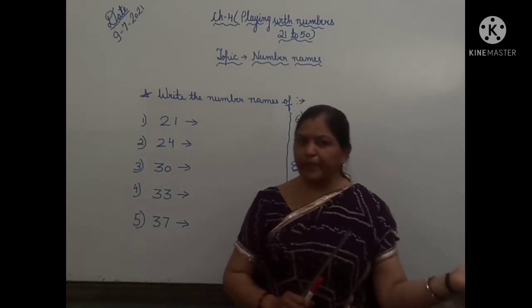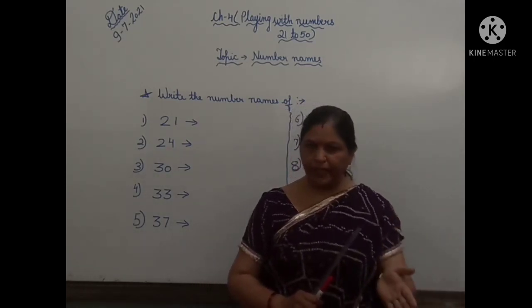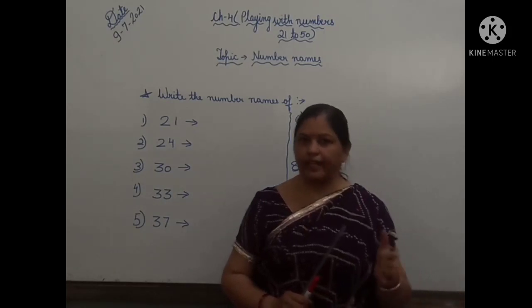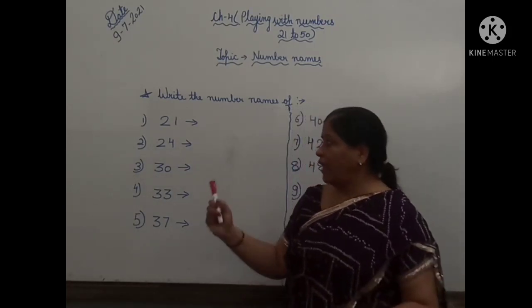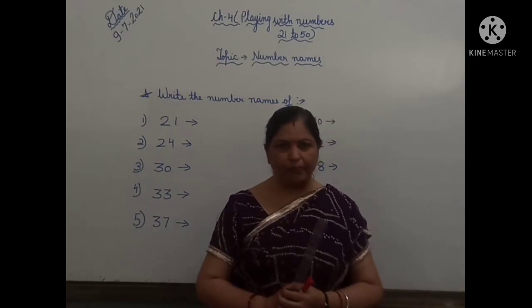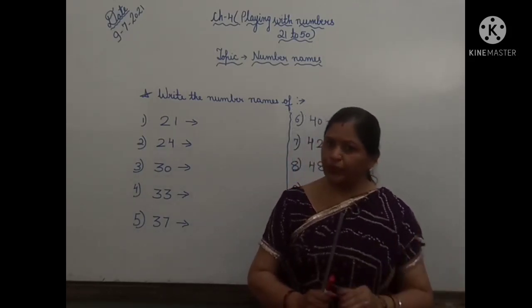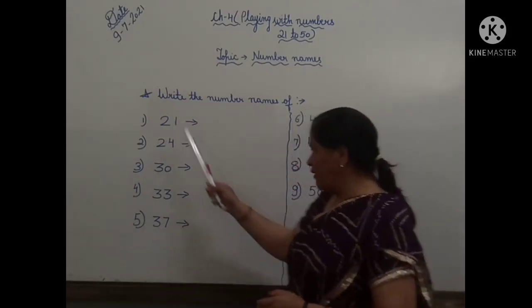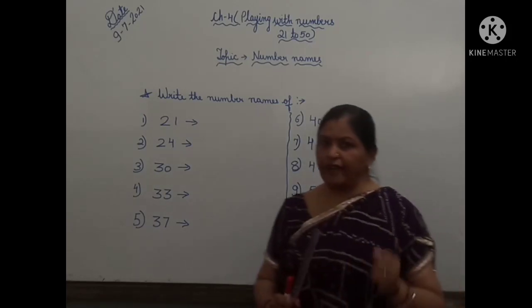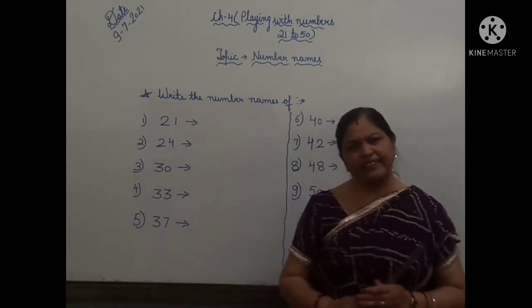Children, as in the previous chapter, like chapter number 2, we have studied the number names from 1 to 20. Now here I am going to explain you the number names from 21 to 50. So I have written some numbers and I will tell you what is the spelling of that number.